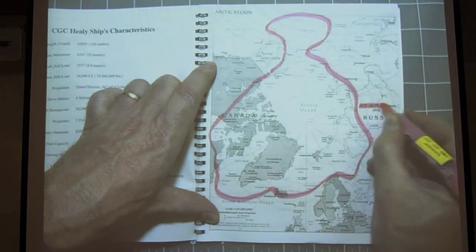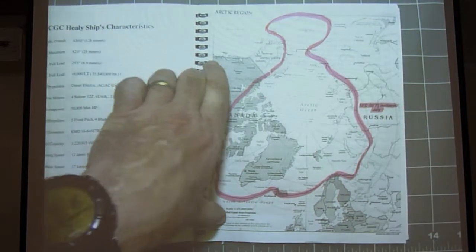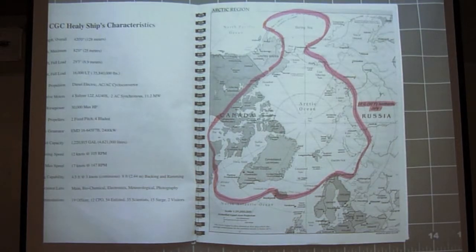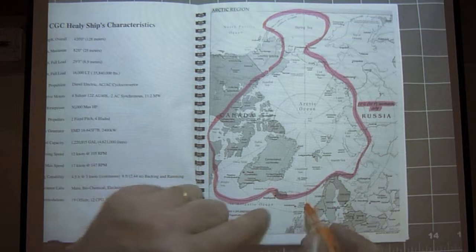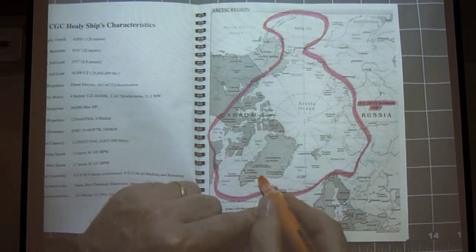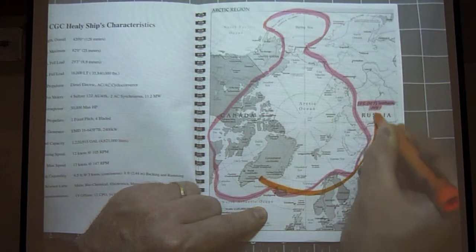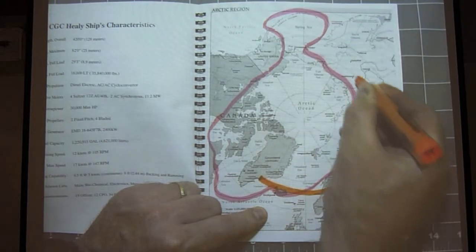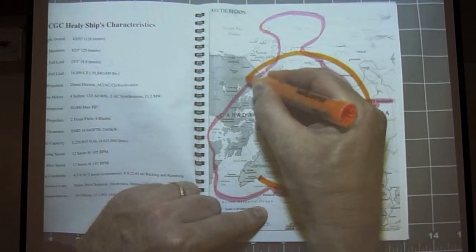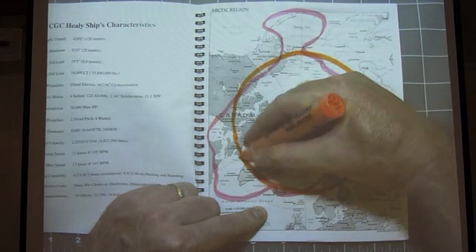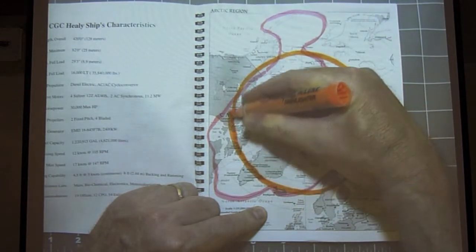So if we're defining the Arctic based on the 10 degree Celsius isotherm, anything inside of that line or north of it would be the Arctic. Compare that to the definition of the Arctic Circle, which I'm going to highlight in orange at 66 and a half degrees north latitude. And you can see that the two definitions don't totally match each other.